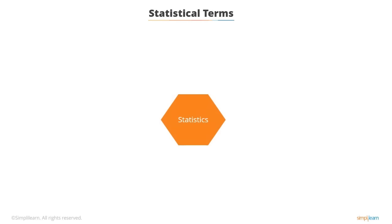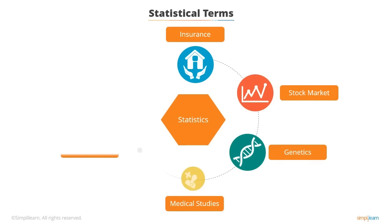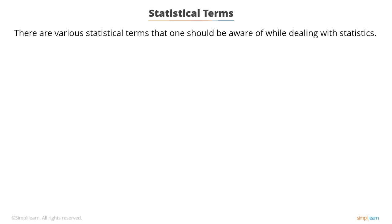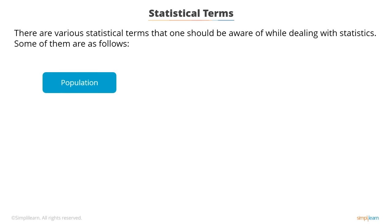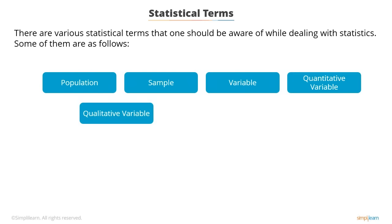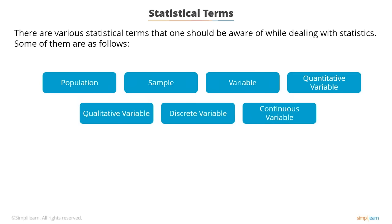The field of statistics touches our lives in many ways, from the daily routines in our homes to making the greatest cities run effectively. Statistics are everywhere. There are various statistical terms one should be aware of while dealing with statistics: population, sample, variable, quantitative variable, qualitative variable, discrete variable, and continuous variable.